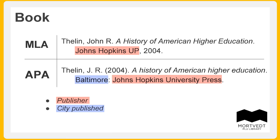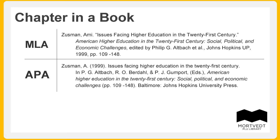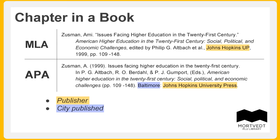Some books are collections of chapters on a particular theme or topic. If the person citing this type of source only uses a single chapter, the citation will reflect that. Like other books, a chapter from an anthology will list the city of publication and the publisher, but there will also be some unique elements.